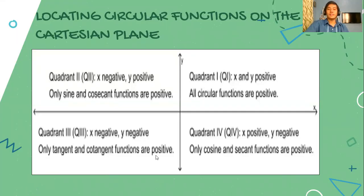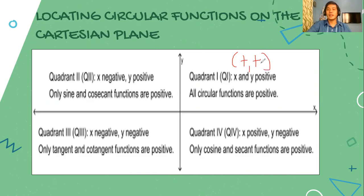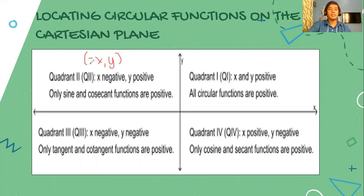Here is the summary of all the signs. For the first quadrant, all six circular functions are positive — meaning sine theta, cosine theta, tangent theta, cosecant theta, secant theta, and cotangent theta are all positive. The reason is that both the x and y values are positive. For the second quadrant, the coordinates of any trigonometric point are a negative x and a positive y. So it is only the y value that is positive, meaning only sine and its corresponding reciprocal function, cosecant, are positive.